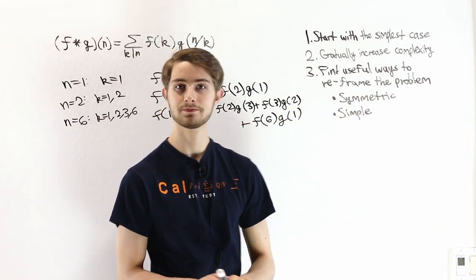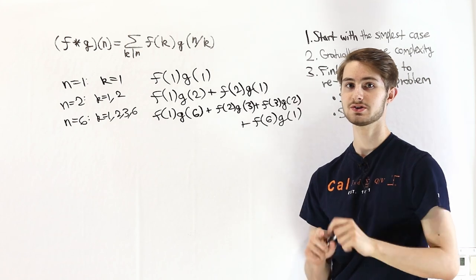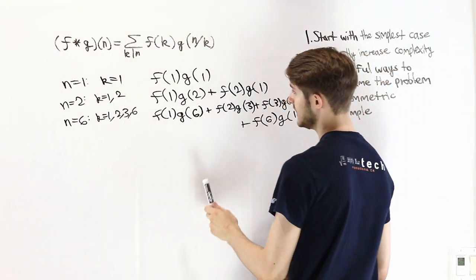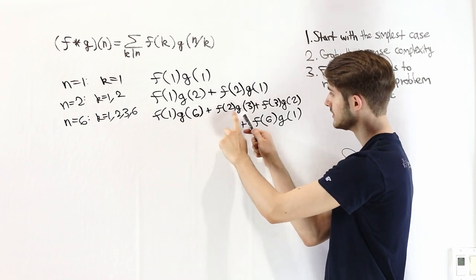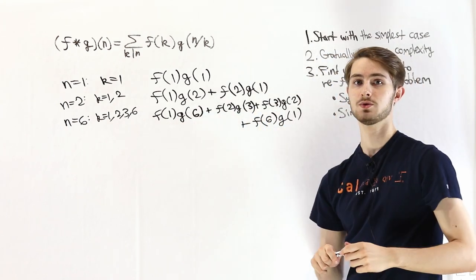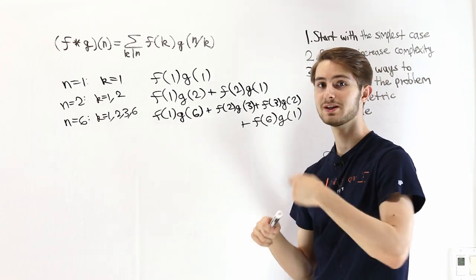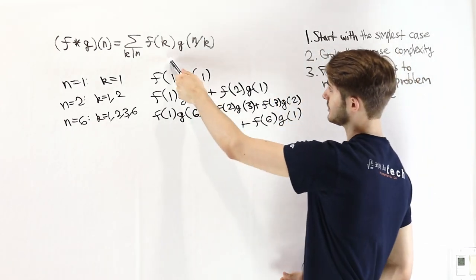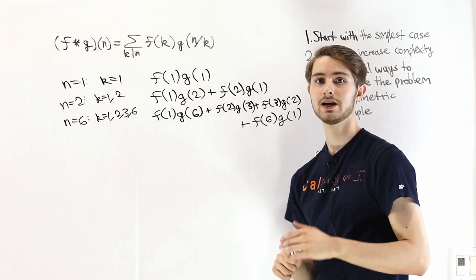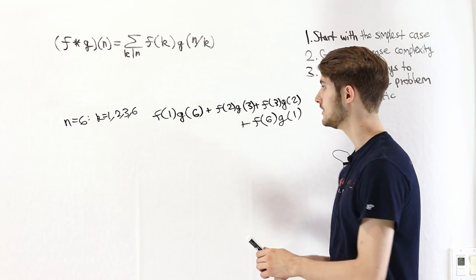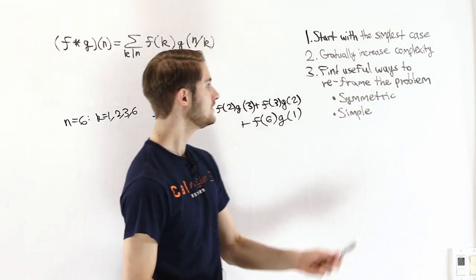Now let's look for patterns to reframe the problem. Notice that whenever we look at the two numbers inside f and g and multiply them together, we always get the same result. For n equals 2: 1 times 2 and 2 times 1, both give 2. For n equals 6: 1 times 6, 2 times 3, 3 times 2, and 6 times 1 all multiply to 6. The two numbers plugged into f and g always multiply together to give n, because we're plugging in k and n over k.